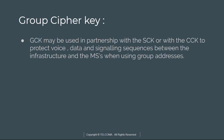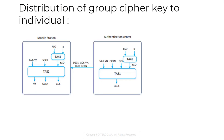The Group Cipher Key (GCK) may be used in partnership with SCKs or even with CCKs to protect voice, data, and signaling sequences when using group addresses. Shown here: the mobile station, authentication center, and all the keys — RSO key, KSO, AD MF, GCK — as well as the authentication set.